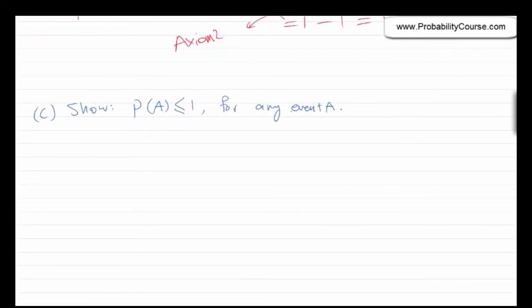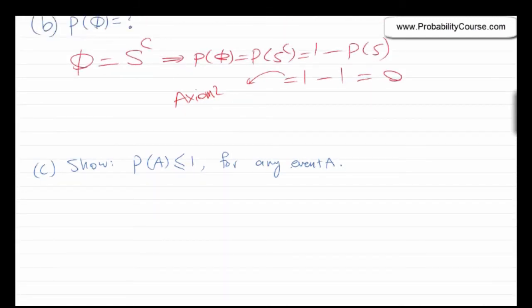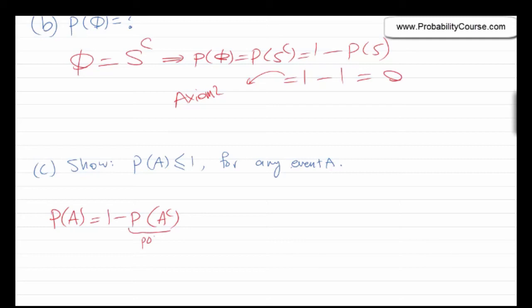Next, we want to show that P(A) ≤ 1 for any event A. We can write P(A) = 1 − P(Aᶜ), which we proved in the first item. Since probability is non-negative by axiom 1, P(Aᶜ) ≥ 0, so 1 minus some non-negative value gives P(A) ≤ 1.